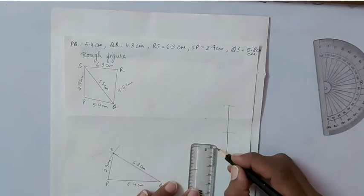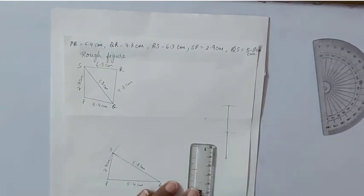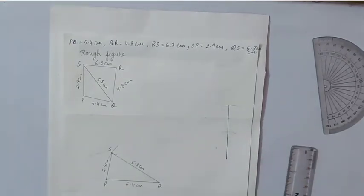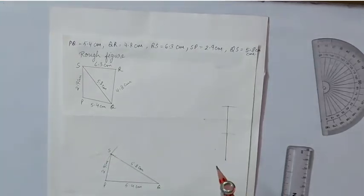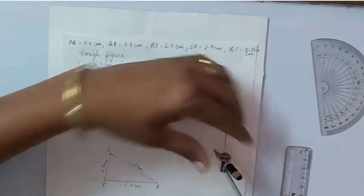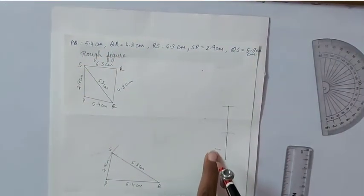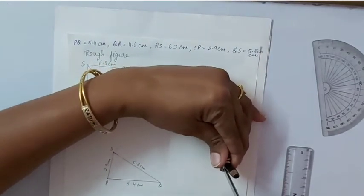Again, we will take the radius 6.3 centimeter. So we are marking the required points aside. When we measure it and try it is not on the same points, so we will reset the radius.